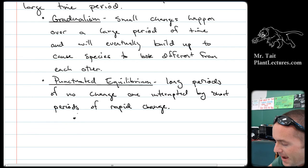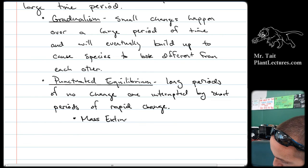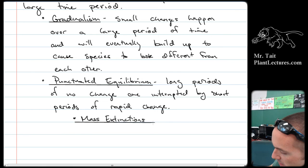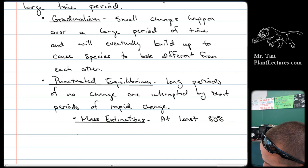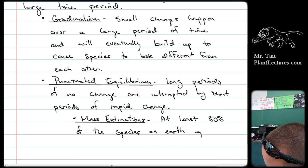Number one, mass extinctions. Okay, the definition of a mass extinction is when 50% of the species on Earth go extinct, right? So at least 50% of the species on Earth go extinct.